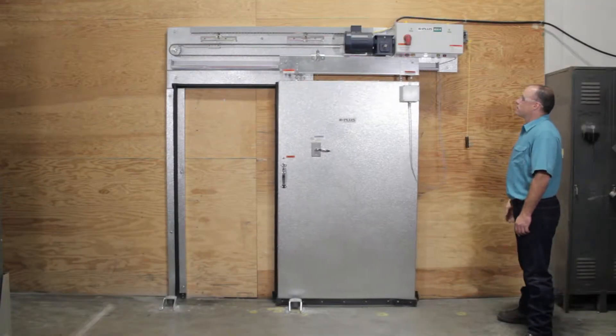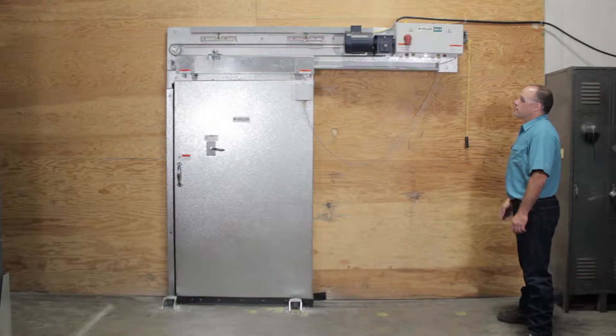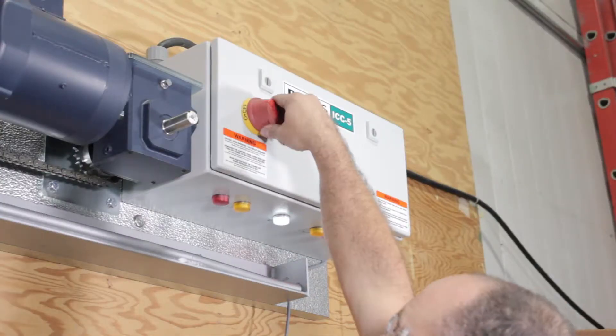First, operate the door to reach the closed position and turn off the power to the door controller. Now the door is safe to work on.